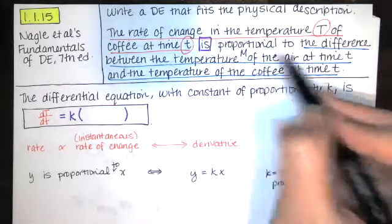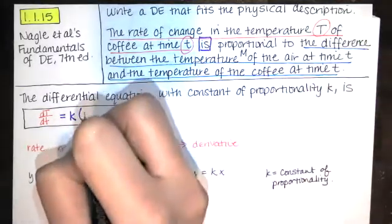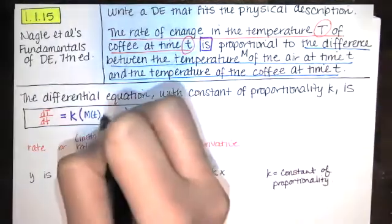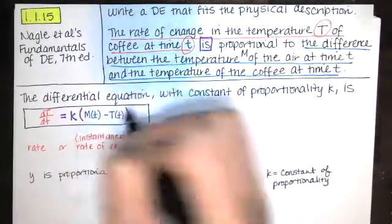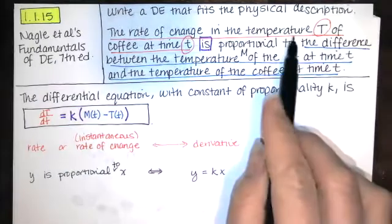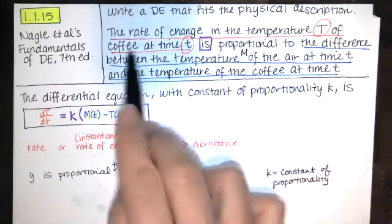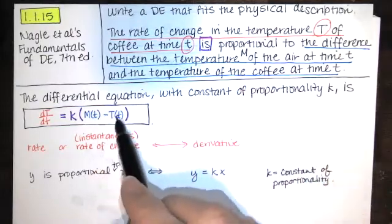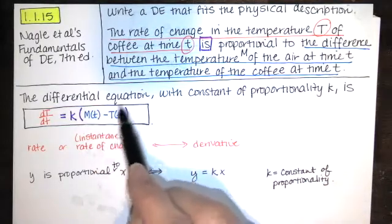So they're saying temperature of the air at time t is represented by M(t). Temperature of the coffee at time t is represented by capital T(t), because capital T is the temperature of the coffee. And the difference between the two of those is just M(t) minus T(t).